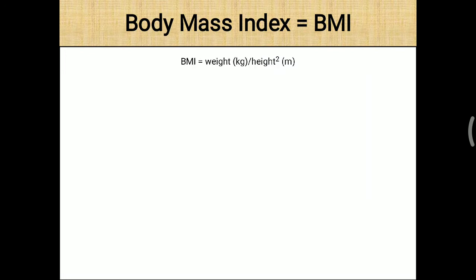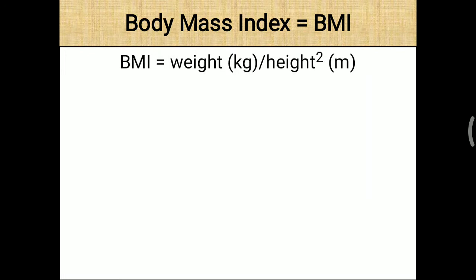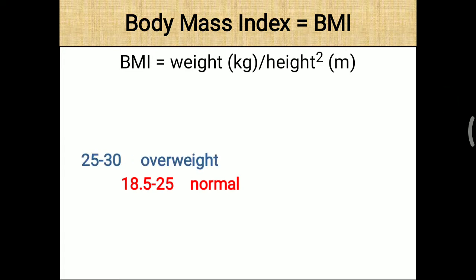The BMI formula is W divided by H squared, where W is weight in kilograms and H is height in meters. Normal BMI is 18.5 to 25 kg/m². When it is more than 25, it is considered overweight. If BMI is less than 18.5, it falls under protein energy malnutrition grade 1.